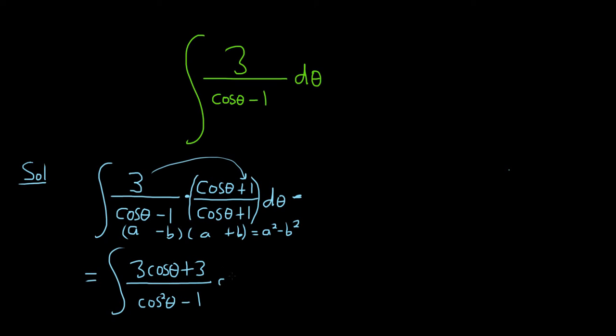So your cosine theta is your a and your 1 is your b. So you'll get a squared, so it'll be cosine squared theta minus 1 squared, so minus 1. And then we still have our d theta. So how did I know to do this? Just experience. This is a problem that you typically do. If you have like 1 over 1 plus sine x dx, it's the same thing, except this time you use 1 minus sine x over 1 minus sine x.